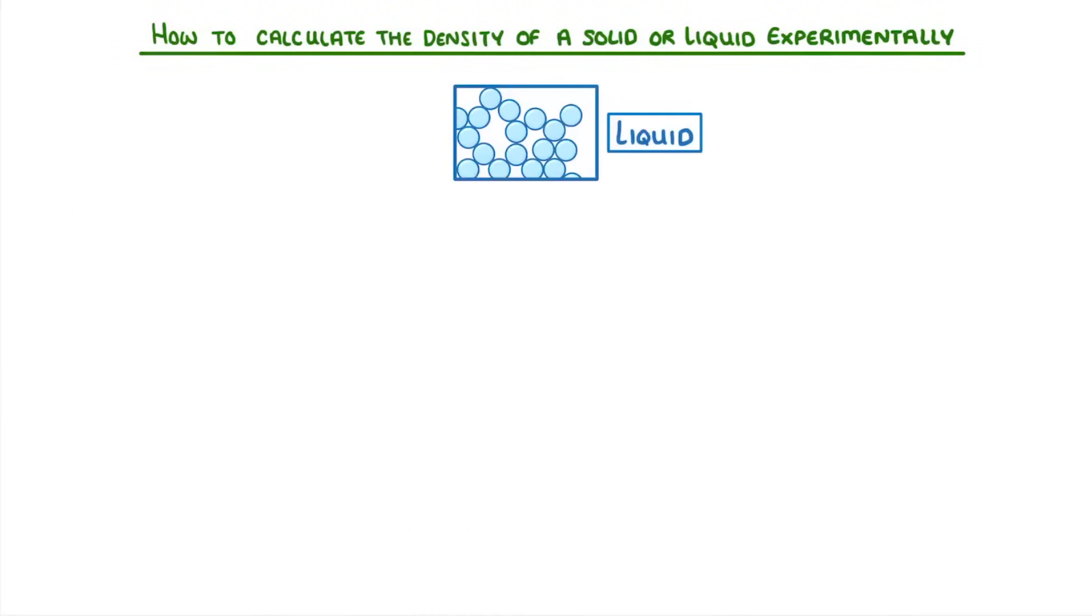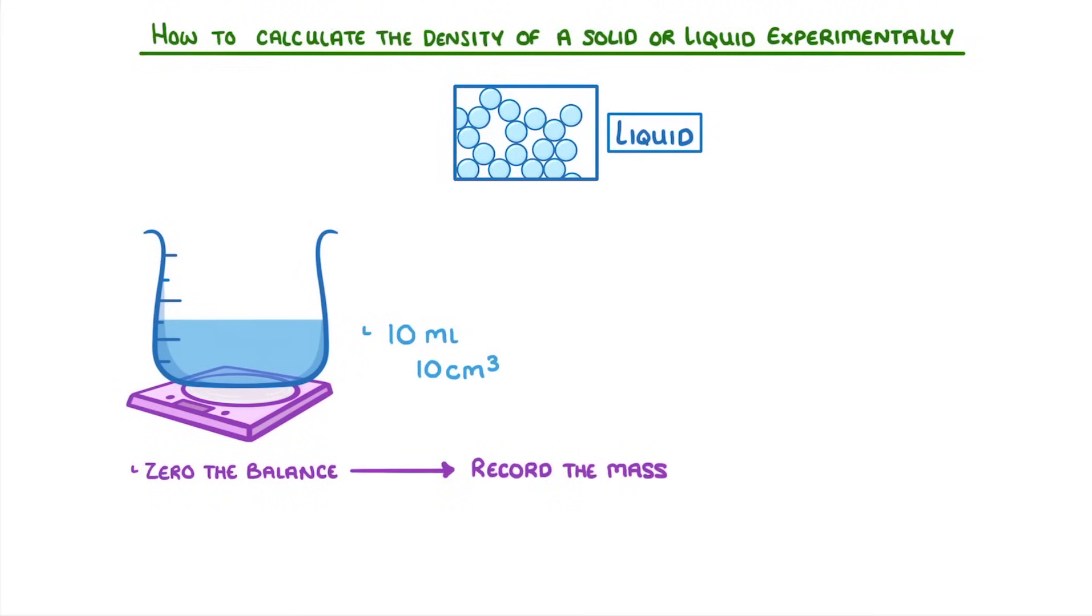Now to find the density of a liquid is a bit easier. All we have to do is place an empty measuring cylinder onto a balance, and zero the balance to reset it. Then we pour some of the liquid into the cylinder, for example 10 millilitres, which is the same thing as 10 centimeters cubed, and we record the mass of that amount of liquid. Then we just divide the mass by the volume, and that gives us our density.